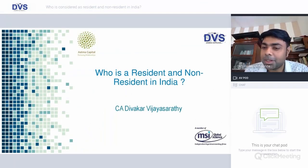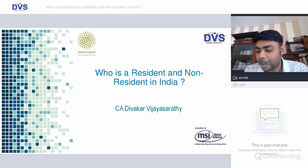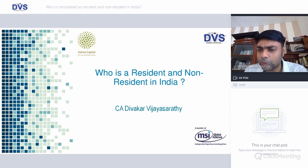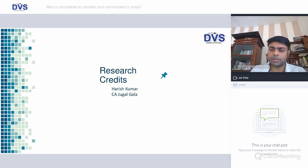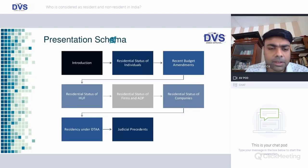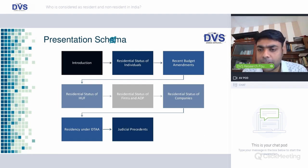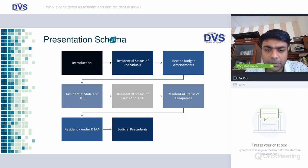Lawmakers tend to complicate simple concepts. We now have a complete mess on how to define or identify when a person or entity becomes resident or non-resident. My focus will be predominantly on the individual piece, and we'll quickly run through the other structures. Thanks to Harish and Jugal for their efforts. The agenda for today: when an individual becomes a resident, budgetary amendments, residential status of HUF, firm, AOP, company, DTA treatment, and judicial precedents.